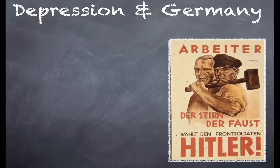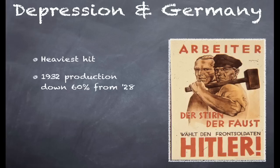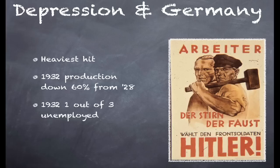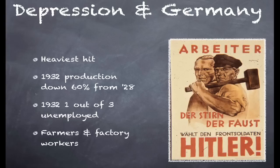The Depression had a profound, very deep effect on Germany — it was the heaviest hit of all the European countries. In 1932, production had fallen by 60% from 1928. That's a massive fall in production, and it meant that by 1932 a third of all the employable workforce didn't have a job. Losing a job means the family has no income, faces hunger, and potentially becomes homeless. Big social problems came with this. Farmers were hit because the price of agricultural produce fell dramatically. Factory workers were hit by mass unemployment and falling wages.